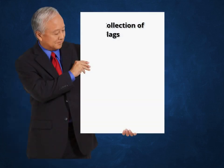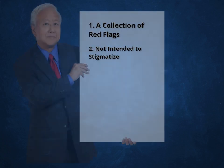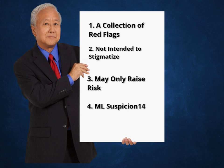The FATF has developed a collection of red flags or indicators that can be used to assist in the detection of misuse of the financial systems by PEPs during a customer relationship. This list of red flags is relevant to detect those PEPs that abuse the financial system and does not intend to stigmatize all PEPs. Often, matching one or more of these red flags may only raise the risk of doing business with a customer, and several red flags may need to be met to create a suspicion. However, in some cases and depending on the specific circumstances, matching just one or more of these red flags will directly lead to a ML Suspicion, also known as indicators of suspicion.